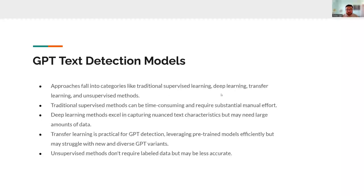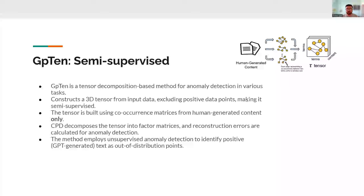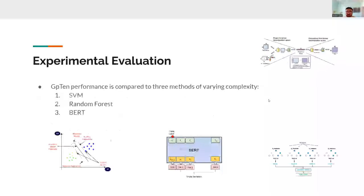In this paper, we also introduce a new GPT generated text detection model. For some background, most models are either traditional supervised, deep learning based, based on transfer learning usually with another deep model, or unsupervised. In this paper, we propose a semi-supervised method based on tensor decomposition. The details are covered in the paper, but we take our method and evaluate it against three other methods of varying complexity: SVM represents a very simple method, random forest represents a mildly complex method, and BERT represents a very complex deep learning method.